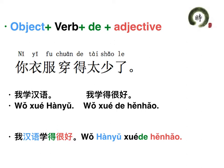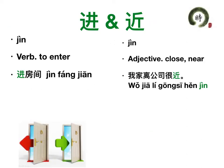The next two words have the same pronunciation. The first one is 进. 进 means 'to enter.' 进房间 — to enter a room. 进. The second one is also pronounced 近, but it is an adjective meaning 'close' or 'near.' 我家离公司很近 — my house is close to the company.